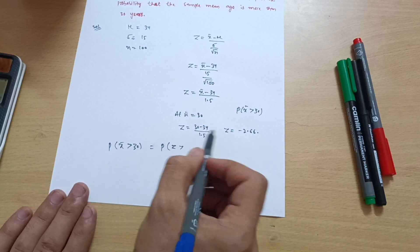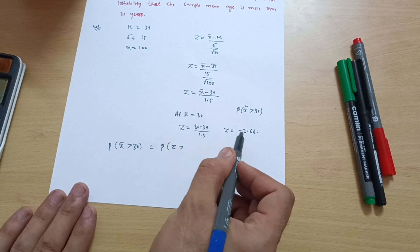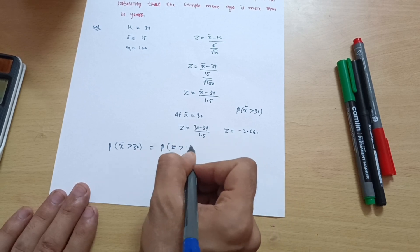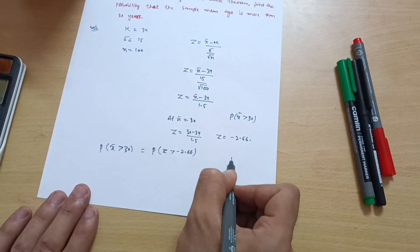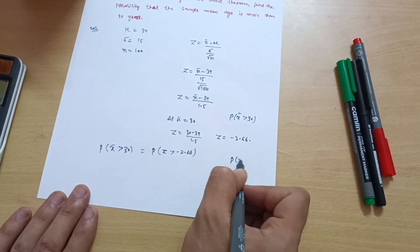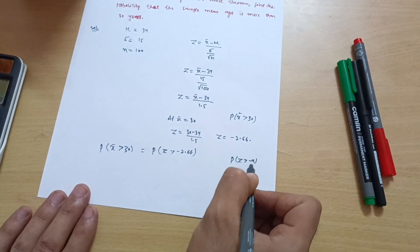So instead of x̄, you write down P of z greater than 30. At 30, what is the z value? Minus 2.66. So there is a short formula here: probability of z greater than minus a is always equal to 0.5 plus phi of a.